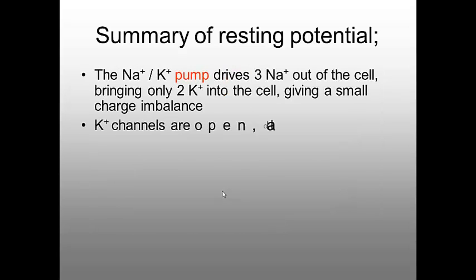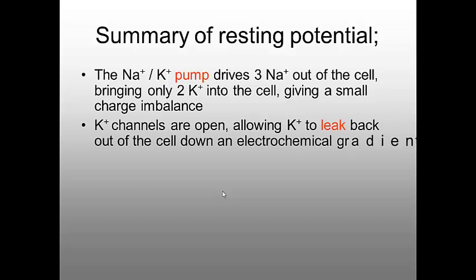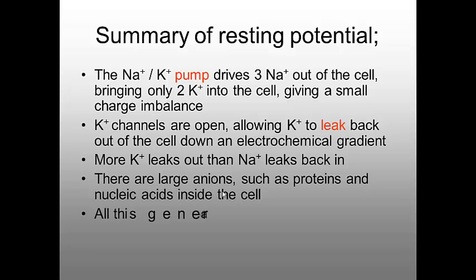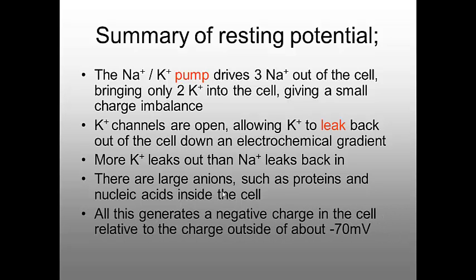So in summary, the Na+ K+ pump drives three Na+ out of the cell, bringing only two K+ back in. And that gives a small charge imbalance. The K+ leak channels are open, allowing K+ to leak back out of the cell, down this electrochemical gradient. And we have more K+ leaking out than Na+ leaking back in. Also contributing are these large anions, such as proteins and nucleic acids, inside the cell. And all this, in total, generates our negative charge, our resting potential, relative to the outside of minus 70 millivolts. So make sure you're clear on all of these points before you go on to the next video about the action potential.